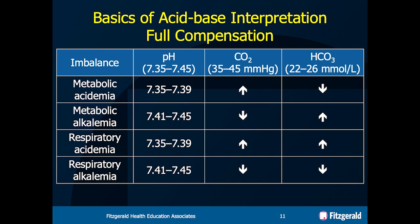So when we look at this ABG, we look at the pH and it looks pretty good. But then when we look at the CO2 and the bicarb, they're both thrown off. So what could possibly be going on?